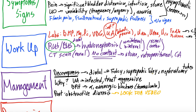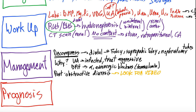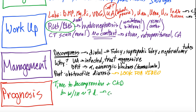So we've diagnosed this gentleman with obstructive uropathy secondary to bladder outlet obstruction, most likely from BPH. We placed a Foley catheter, decompressed him, started an alpha blocker, and are monitoring for post-obstructive diuresis. What's his prognosis? Prognosis is highly dependent on time to decompression and history of chronic kidney disease. If decompressed within about seven days, patients can get almost complete recovery. If it takes longer or they have CKD, there may be residual kidney injury. Overall, if decompressed in a timely manner, prognosis can be very promising.